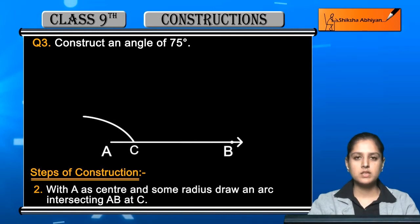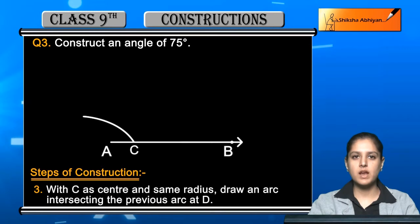Now the third step is with C as center and same radius, draw an arc intersecting the previous arc at D.